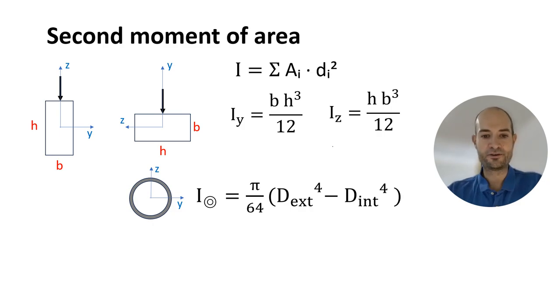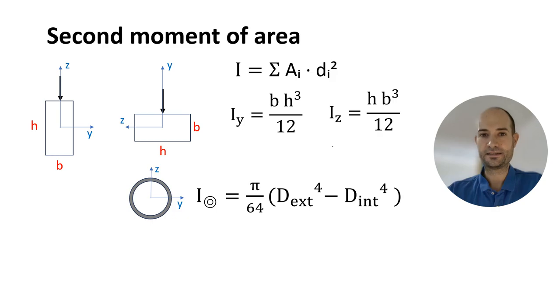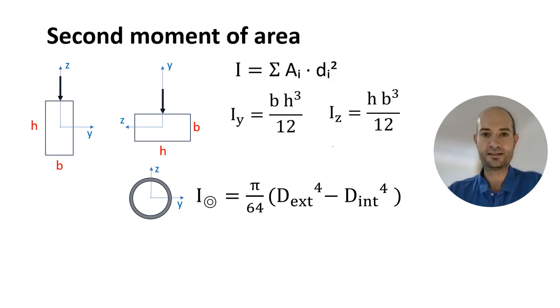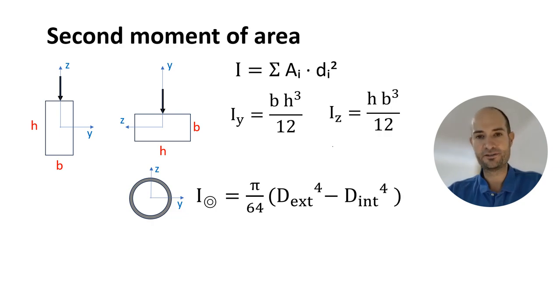For the tube, we calculated that the second moment of area equals π over 64 times the external diameter to the fourth minus the internal diameter to the fourth.